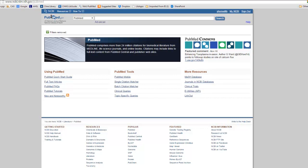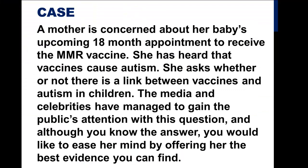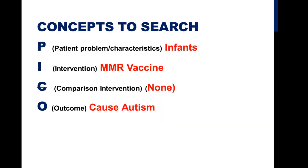In this video, we will use PubMed to search for a PICO question. The case under consideration involves the main concepts of infants, MMR vaccine, and causing autism. There is no comparison in this question, so we would be searching a P, an I, and an O concept.